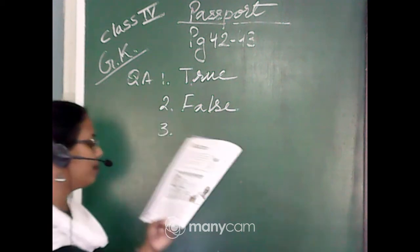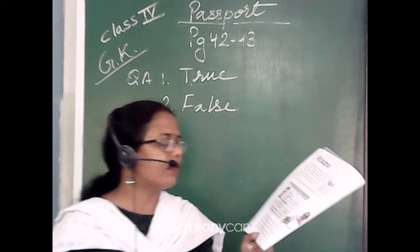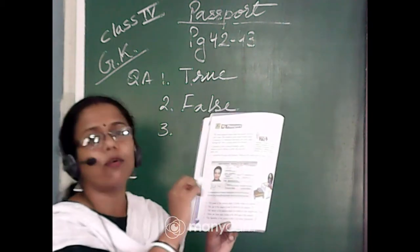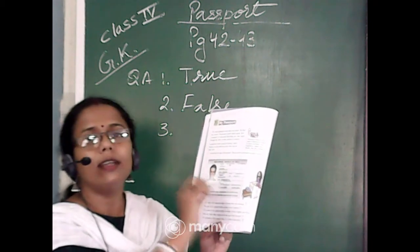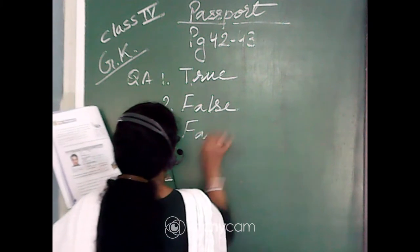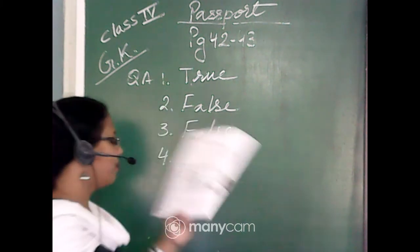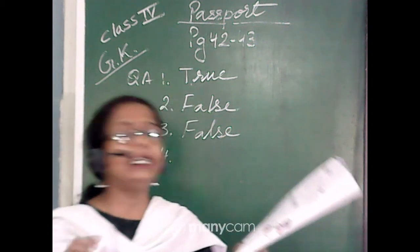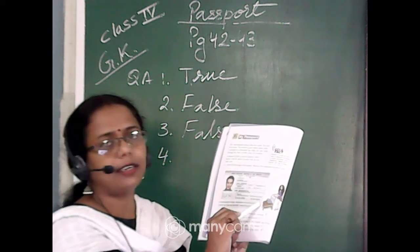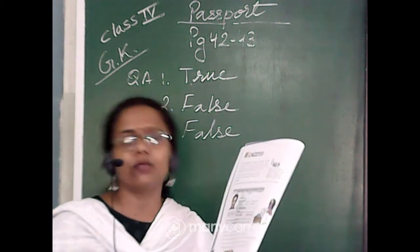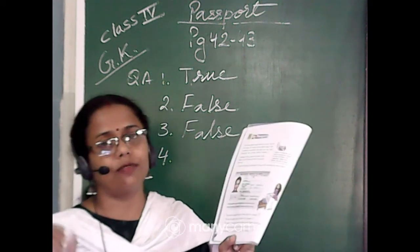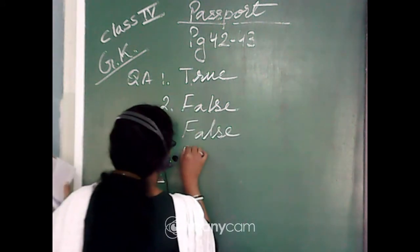Statement three: 'The details of the passport holder are written in both English and Hindi.' We don't find any other language except English in the passport — it is written totally in English. So this is also a false statement. Statement four: 'There are three dates written on the first page of the passport.' Yes — we can see three dates: date of birth, date of issue, and date of expiry. So this is true.